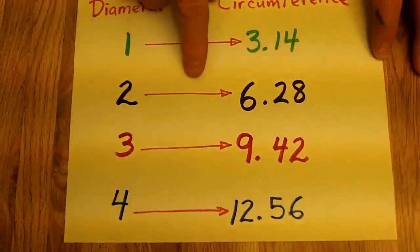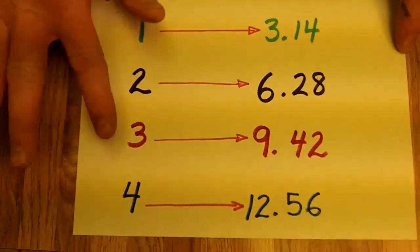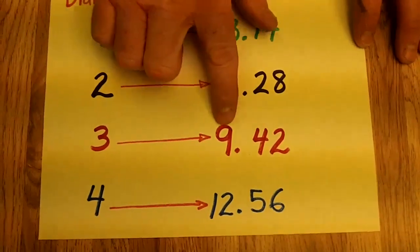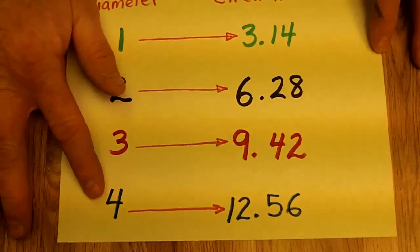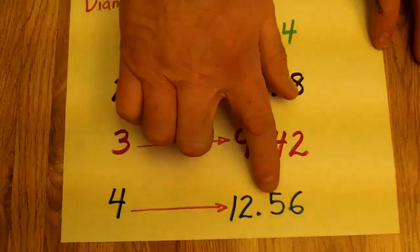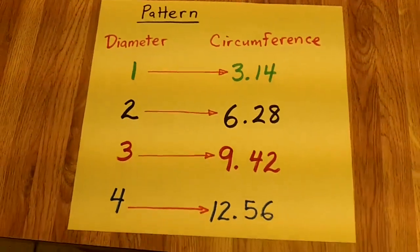And if it was two, well, two times three is six, and a little over that, 6.28. And then three times three is nine, a little over that was 9.42. And a unit measurement of four came out to 12.56. And for every single circle, this worked.